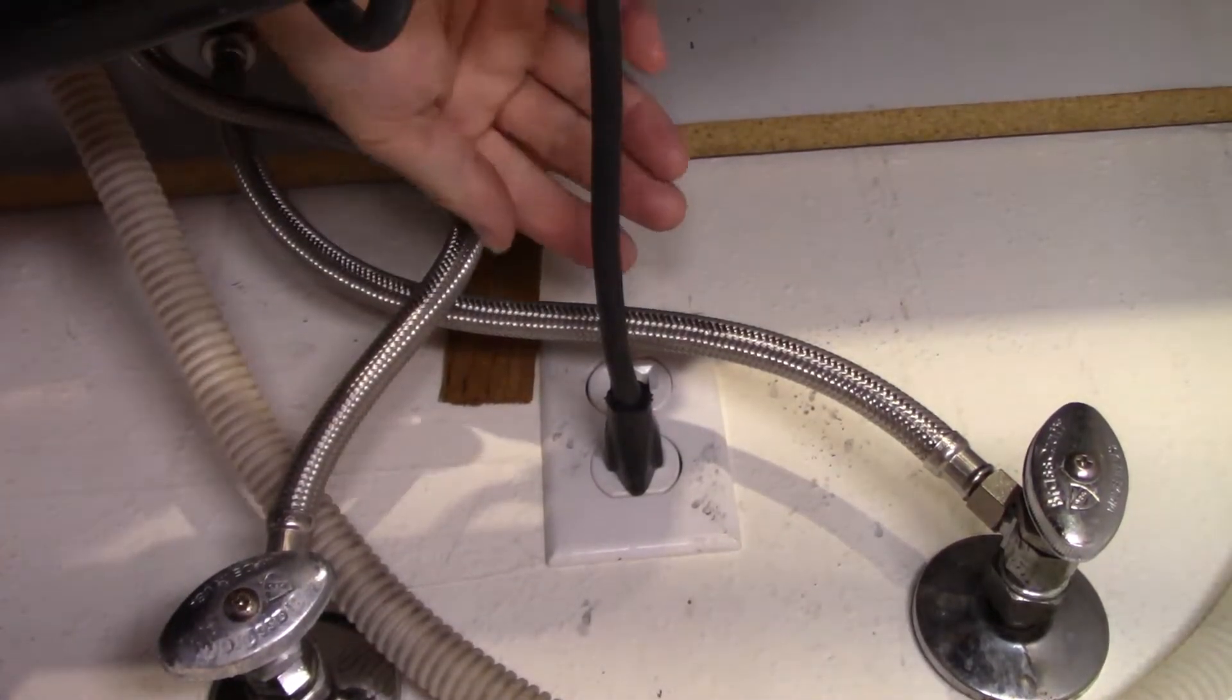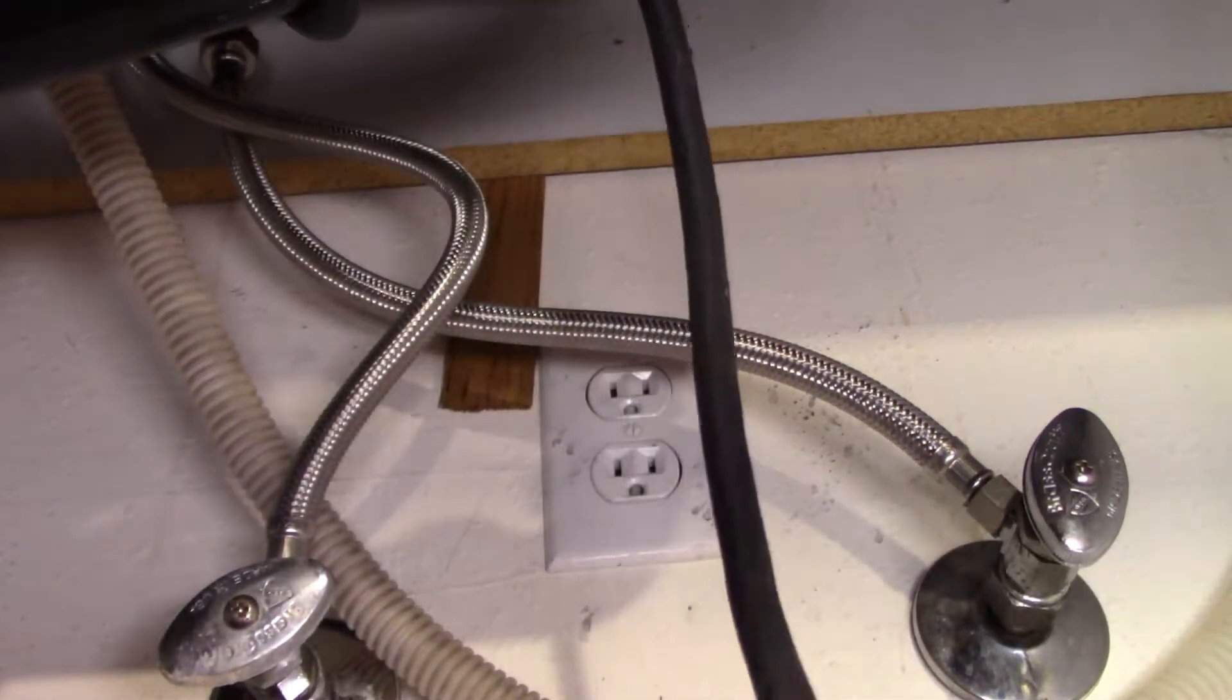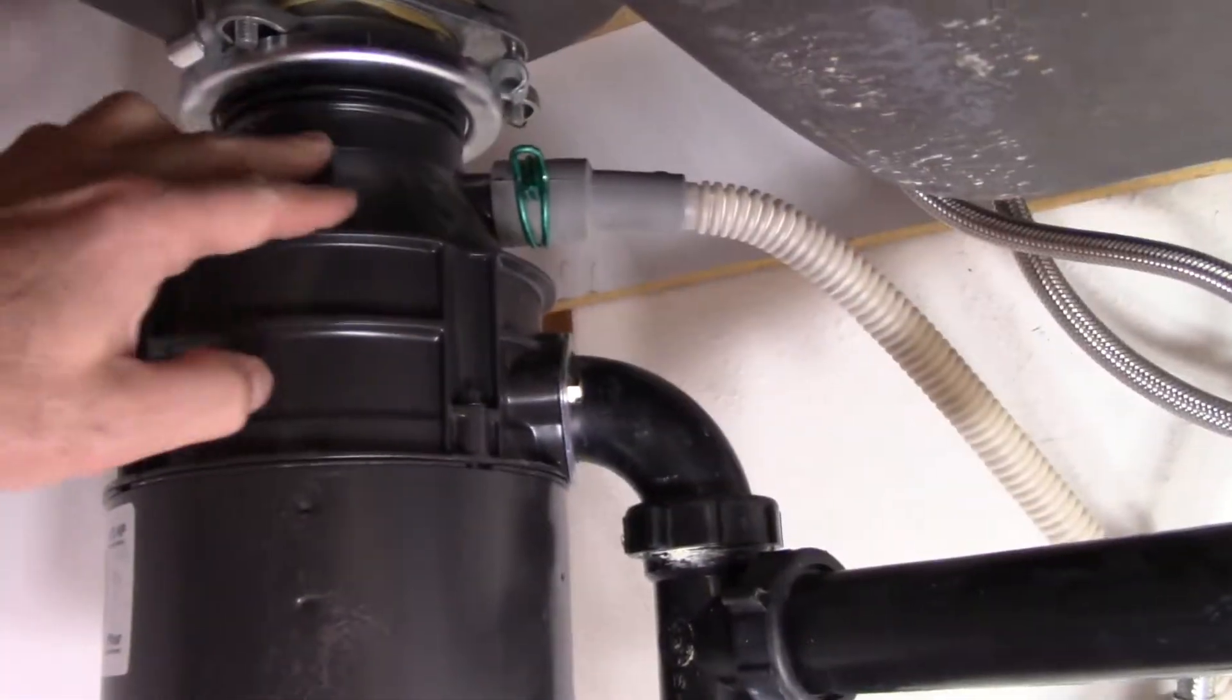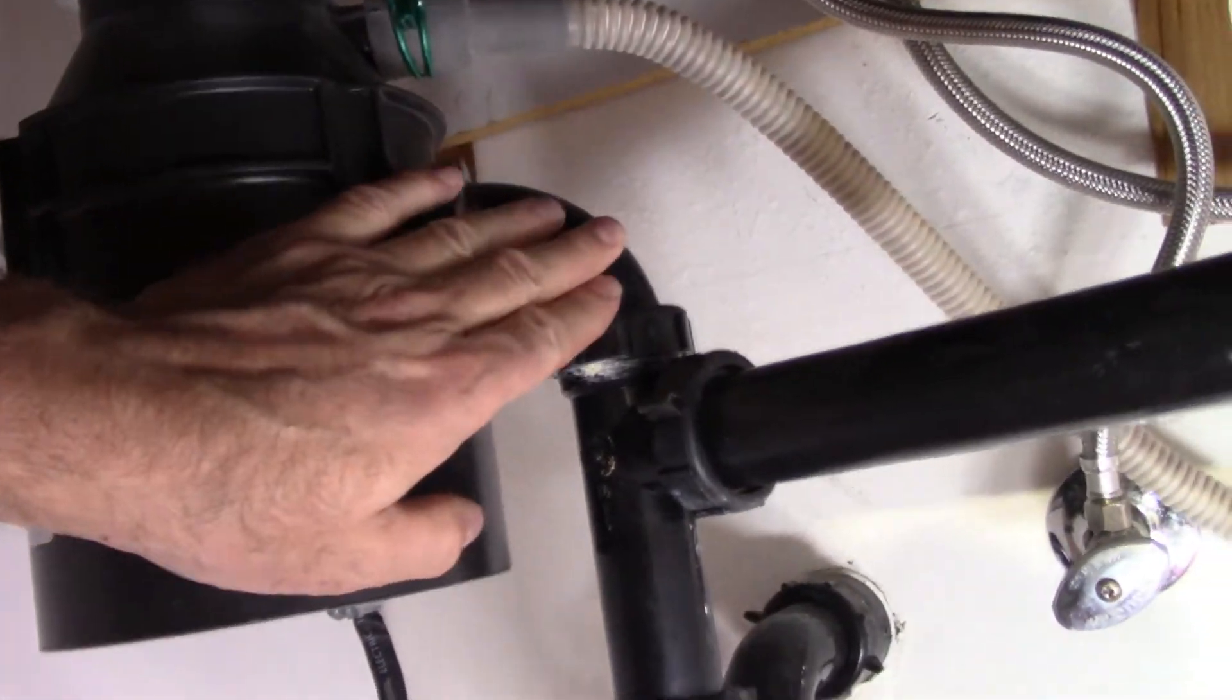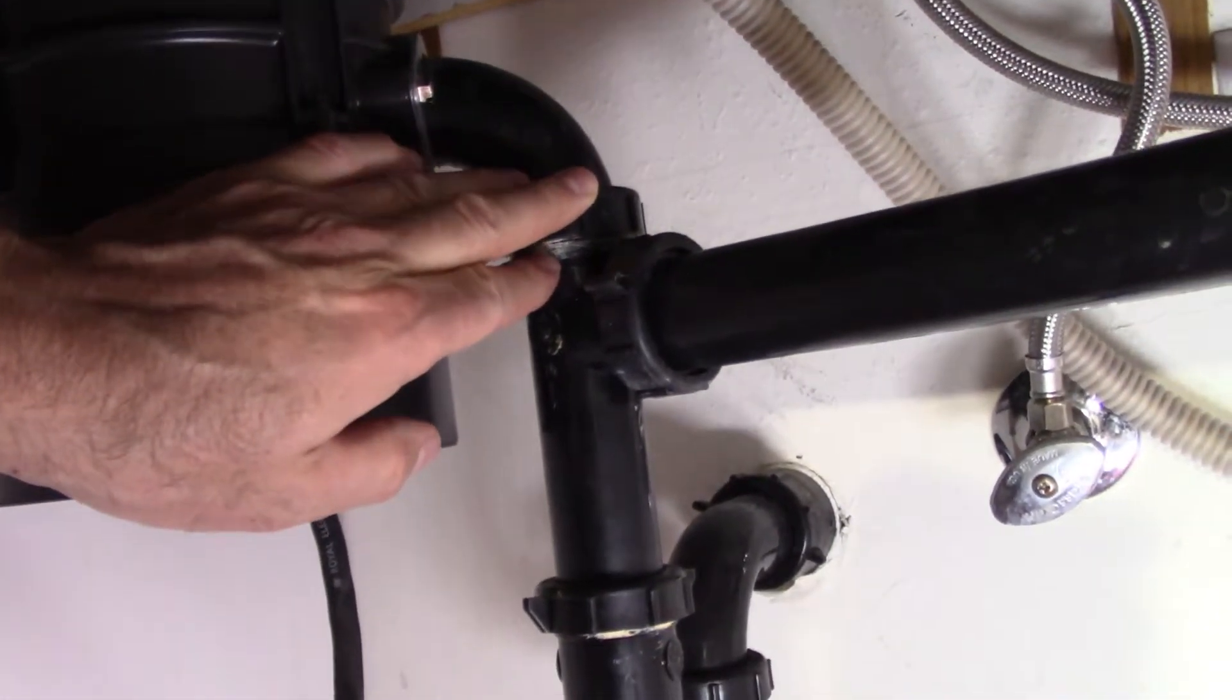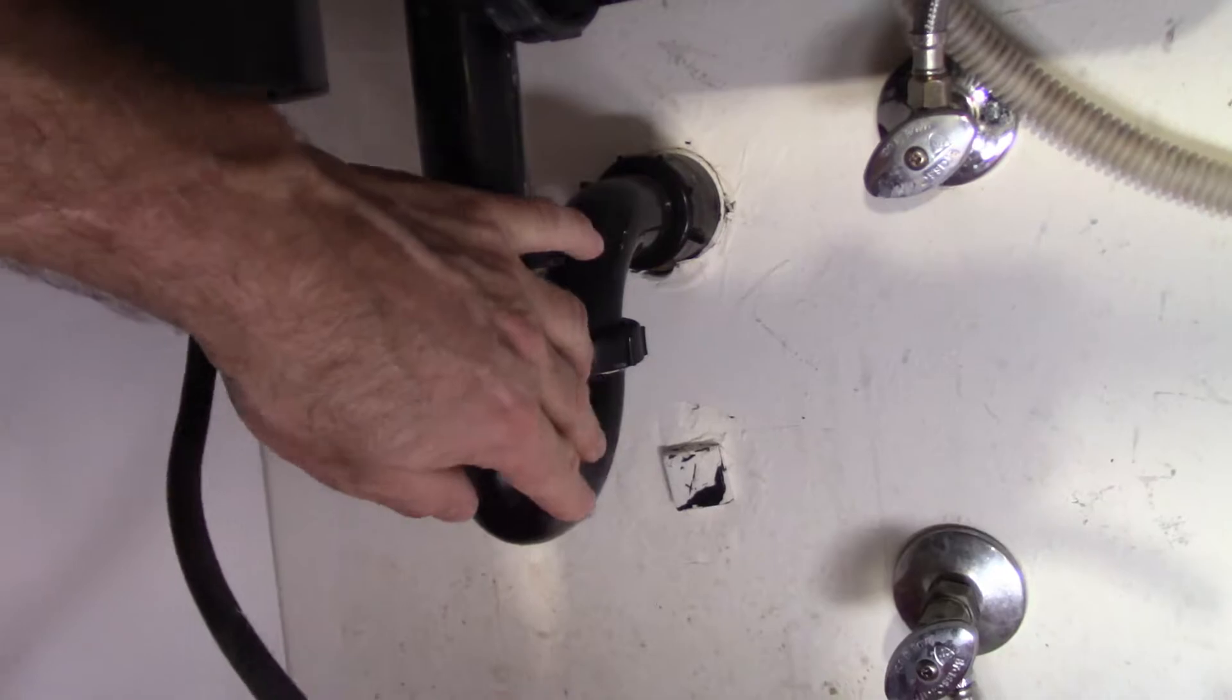First thing I want to do is unplug it. Garbage disposal from the sink, discharge from the dishwasher, discharge out of the garbage disposal through the P-trap and outside.